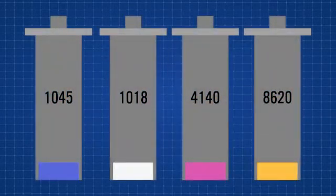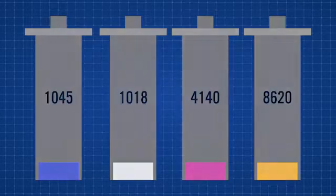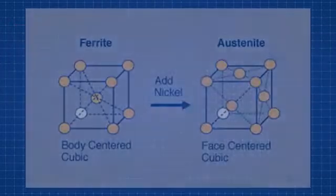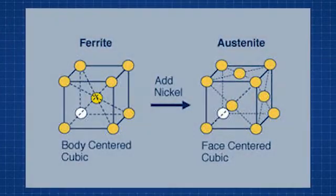Can you now identify how much carbon is present in each of the specimens for this lab? As you may know, steels can have different crystal structures. BCC and FCC are the most common. While some of these structures can be found naturally, we can manipulate the alloy to give us the structure we need.